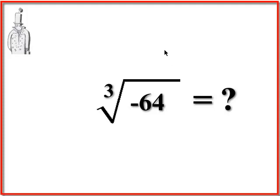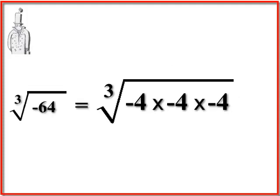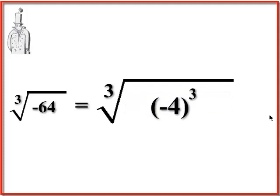So we need a negative number that's all the same number. Let's see what we can break negative 64 down into. Sure enough, negative 4 times negative 4 is positive 16, times negative 4 again is negative 64. So negative 4 is going to be probably our answer, but let's rewrite it.